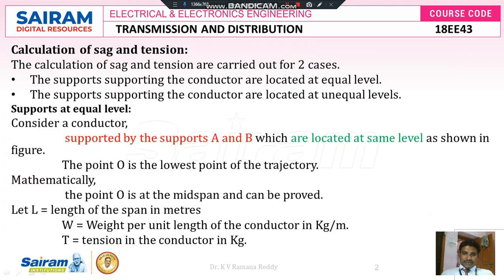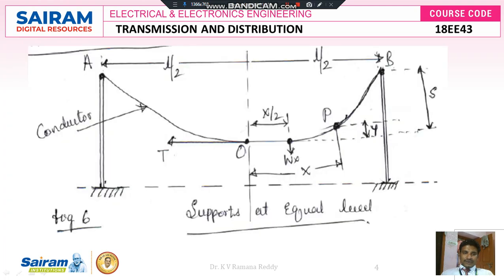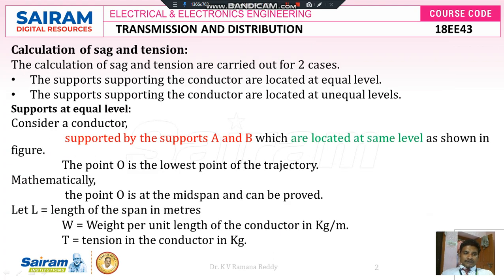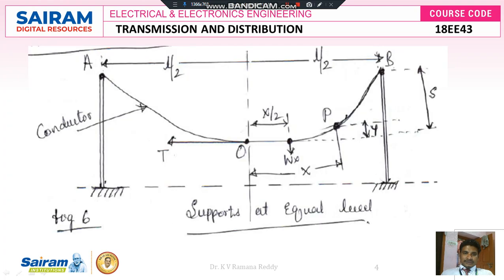Point O is the lowest point of the trajectory. Point O is the lowest point of this trajectory, and mathematically the point O is the mid-span, which can be proved. From terminal A to terminal B, if we stretch any wire, the midpoint is O, and hence it is also called the origin.